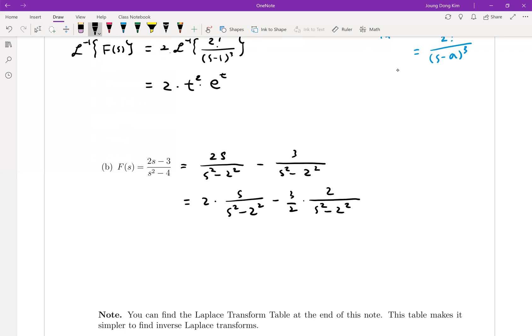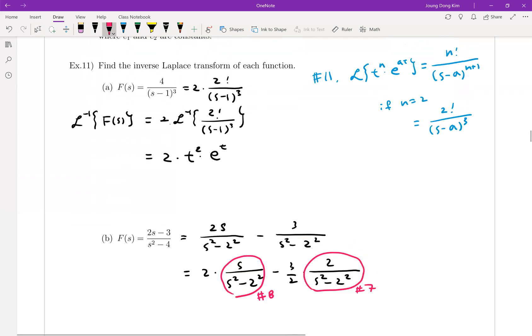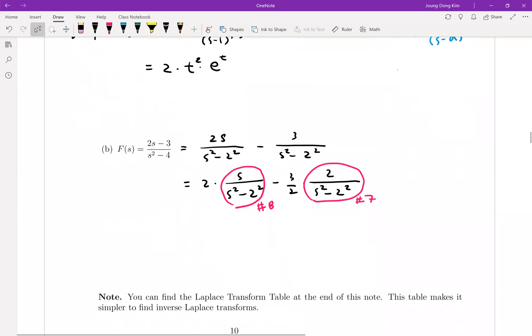And then, as I told you, this guy is exactly table number 8, and this guy is table number 7. Did I mention about the number? Okay, there we go. Then, okay, let's do it.